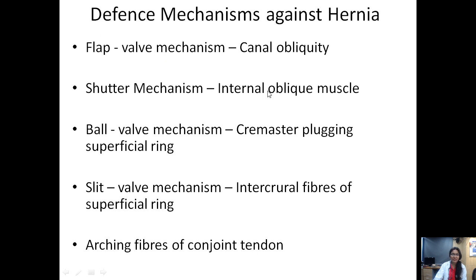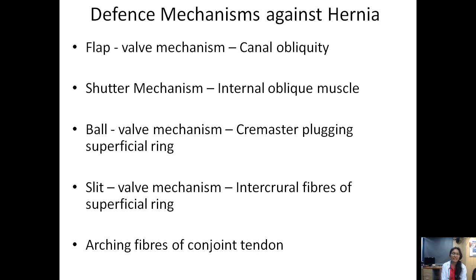Now, the defense mechanisms provided by nature against hernia formation: the flap valve mechanism is contributed by the obliquity of the inguinal canal — as intra-abdominal pressure rises, the roof and floor of the inguinal canal oppose and prevent herniation. The shutter mechanism is contributed by the arching fibers of the internal oblique muscle. The ball valve mechanism involves the cremaster muscle plugging the superficial ring upon rise in intra-abdominal pressure. The slit valve mechanism involves intercural fibers that bound the superficial ring in the external oblique aponeurosis contracting to close the ring. Also protective are the arching fibers of the conjoined tendon.